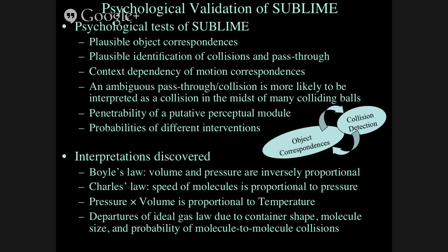On the validation side, we've been trying to psychologically validate SUBLIME — seeing whether it creates similar object correspondences as people, identifies collisions and pass-throughs similarly to people, and shows similar patterns of context-dependent motion correspondences. The results are looking pretty good. We also check whether it does similar interventions as different classes of human beings, and it's able to create something akin to the ideal gas laws — Boyle's Law, Charles' Law, and the idea that pressure times volume should be proportional to temperature.